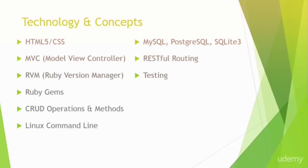CRUD operations and methods — by CRUD I mean create, read, update, and delete. All our Rails applications will include resources, whether it's pages or blog posts or events or whatever, and we should be able to perform these operations on them. The Linux command line — don't worry if you don't know anything about that, everything's going to be pretty straightforward. We're going to use Ubuntu to develop, which is a really popular Linux platform. MySQL, PostgreSQL, and SQLite are the three most popular databases to use with Rails and we'll be taking a look at all three.